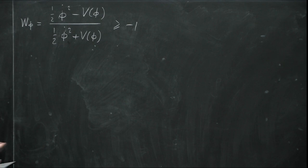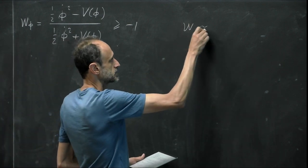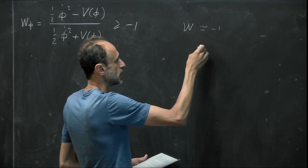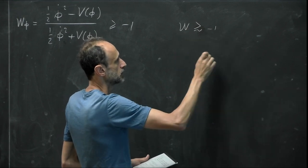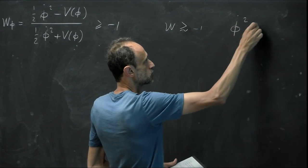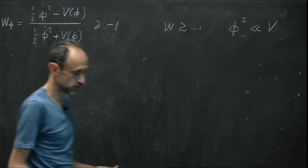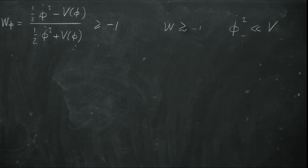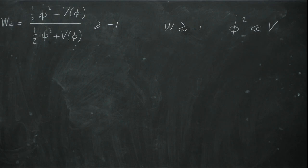To have something accelerating with w close to minus one, we need φ̇² to be much smaller than the potential energy — so kinetic energy is much less than potential energy. This is similar to slow-roll inflation, although here there is also a matter component contributing to the energy density of the universe; only eventually, in the future, will the scalar field dominate.